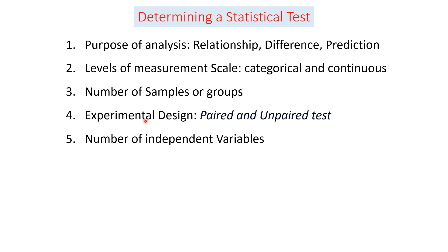The fourth factor is the experimental design, which can be paired or unpaired. In the paired case, we have a single group with multiple or repeated measures. In the unpaired case, we have separate independent groups with independent measures. The fifth factor is the number of independent variables, which also determines which statistical test can be used.